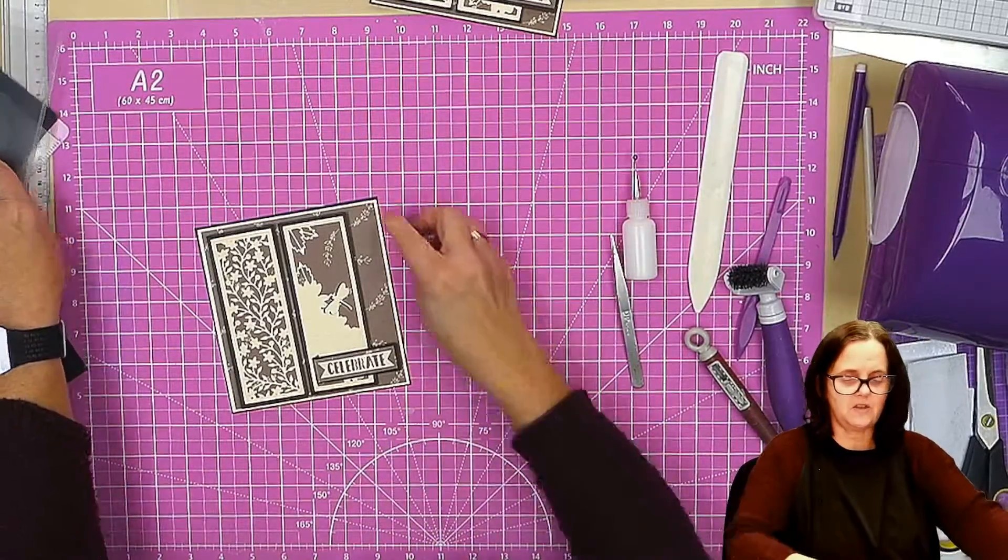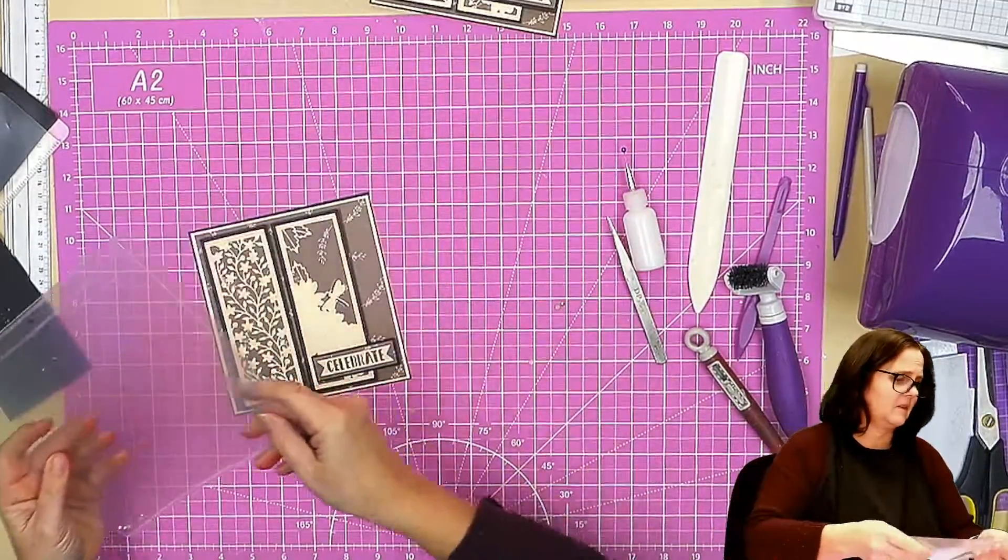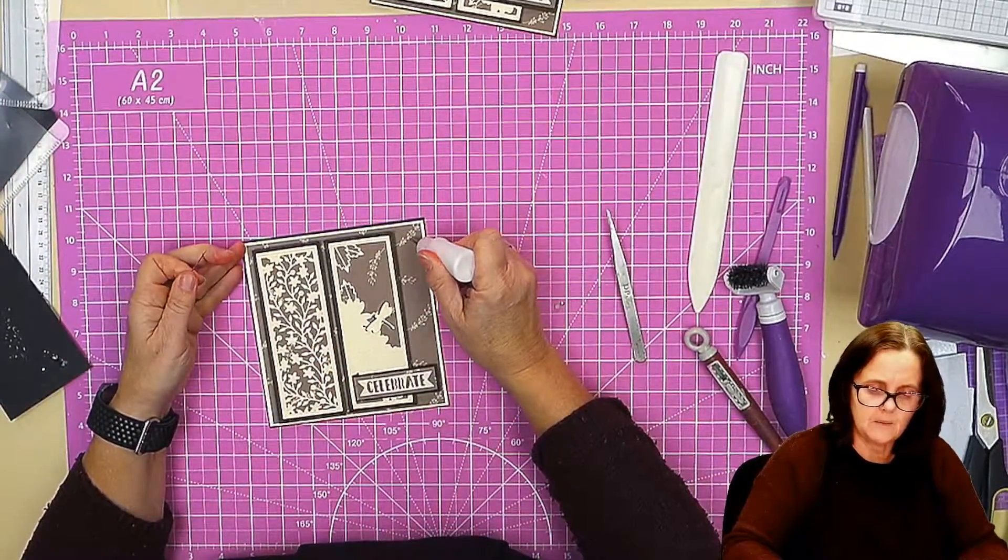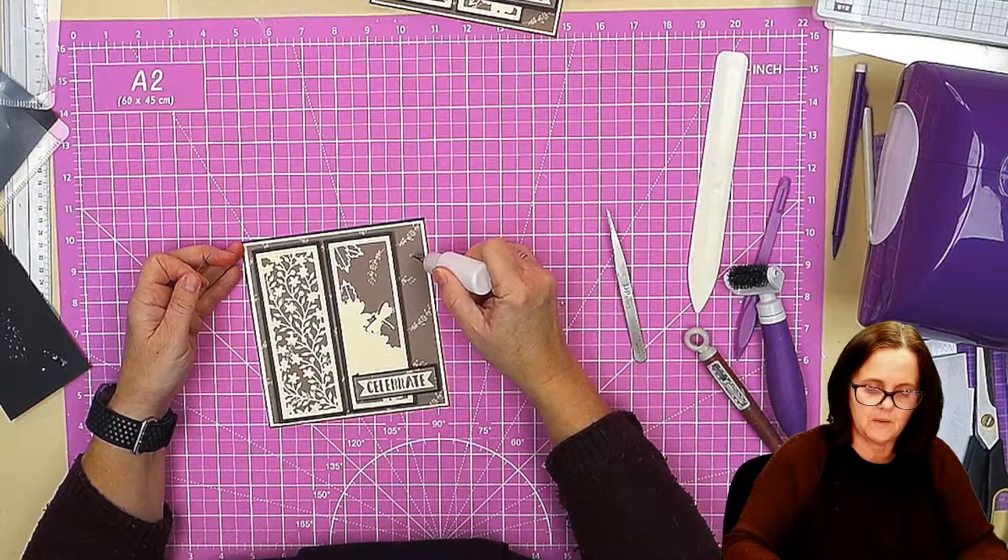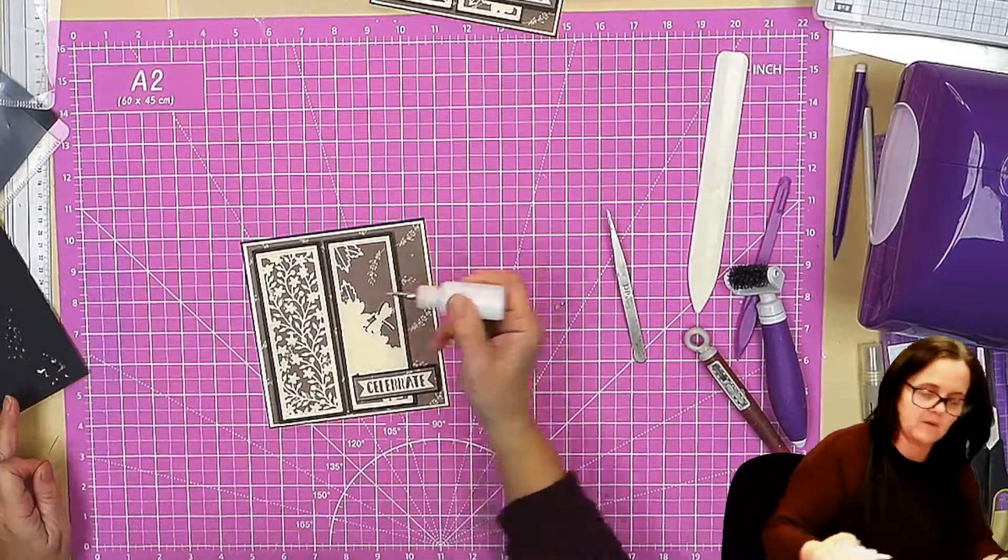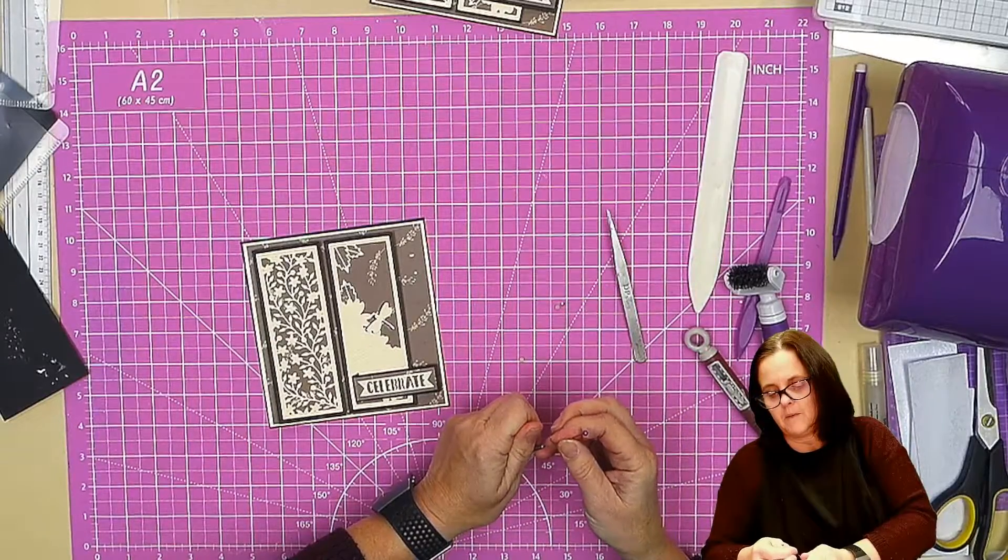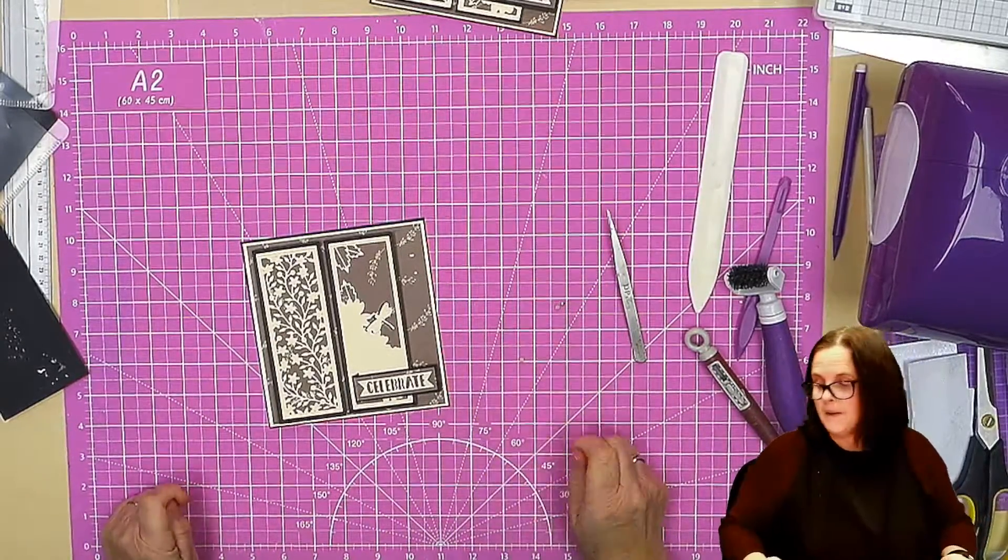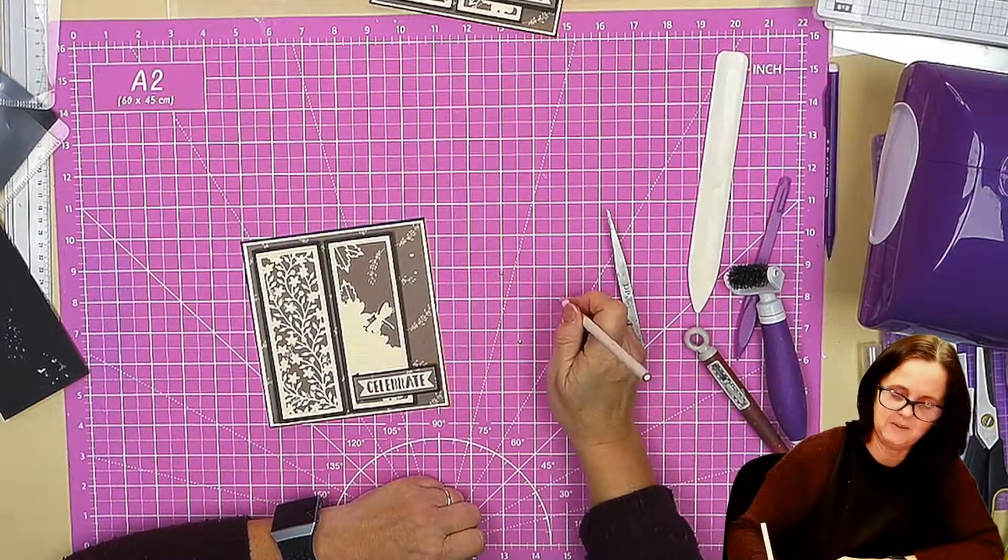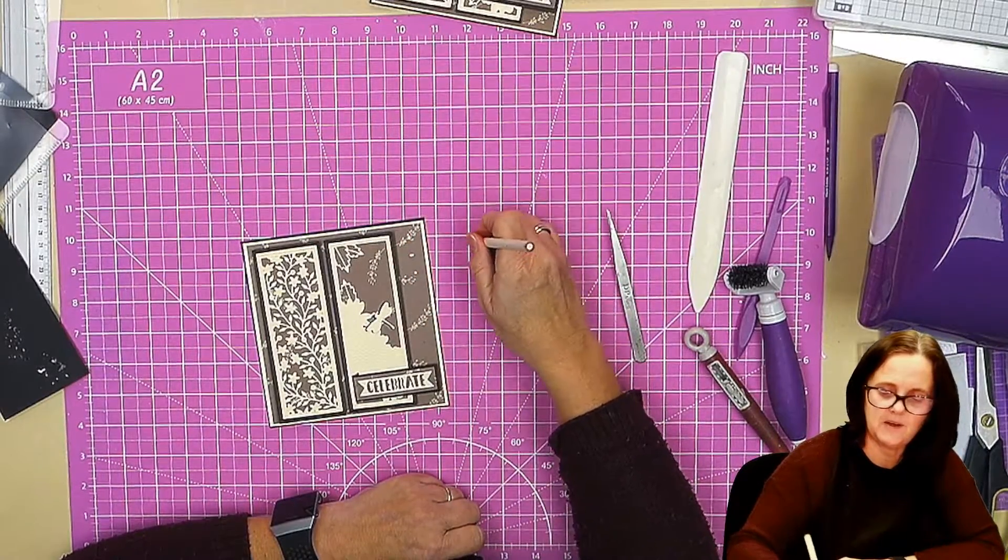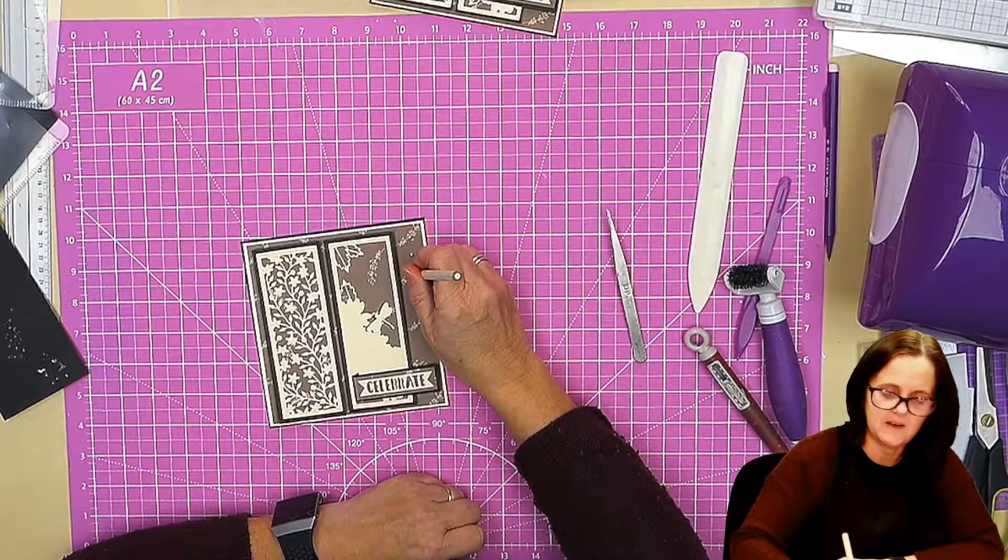And then I decided not to go for a bow on this card because I just felt there wasn't enough room. So I've got a few little black pearls. These are my other obsession, I have these in a gazillion colors. Just three. Oh, the glue's gone all bubbly. One, oh goodness, put it on the right way woman. One, two, and three. Excellent.